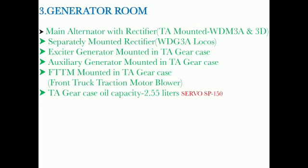Generator Room: Main Alternator with Rectifier, TA mount end — WDM3A and 3D; separately mounted rectifier in WDG3A locos. Exciter Generator mount end in TA gear case. Auxiliary Generator mount end in TA gear case. FTTM mount end in TA gear case. Front Truck Traction Motor Blower, TA gear case. Oil capacity is 2.55 liters, Servo SP150.